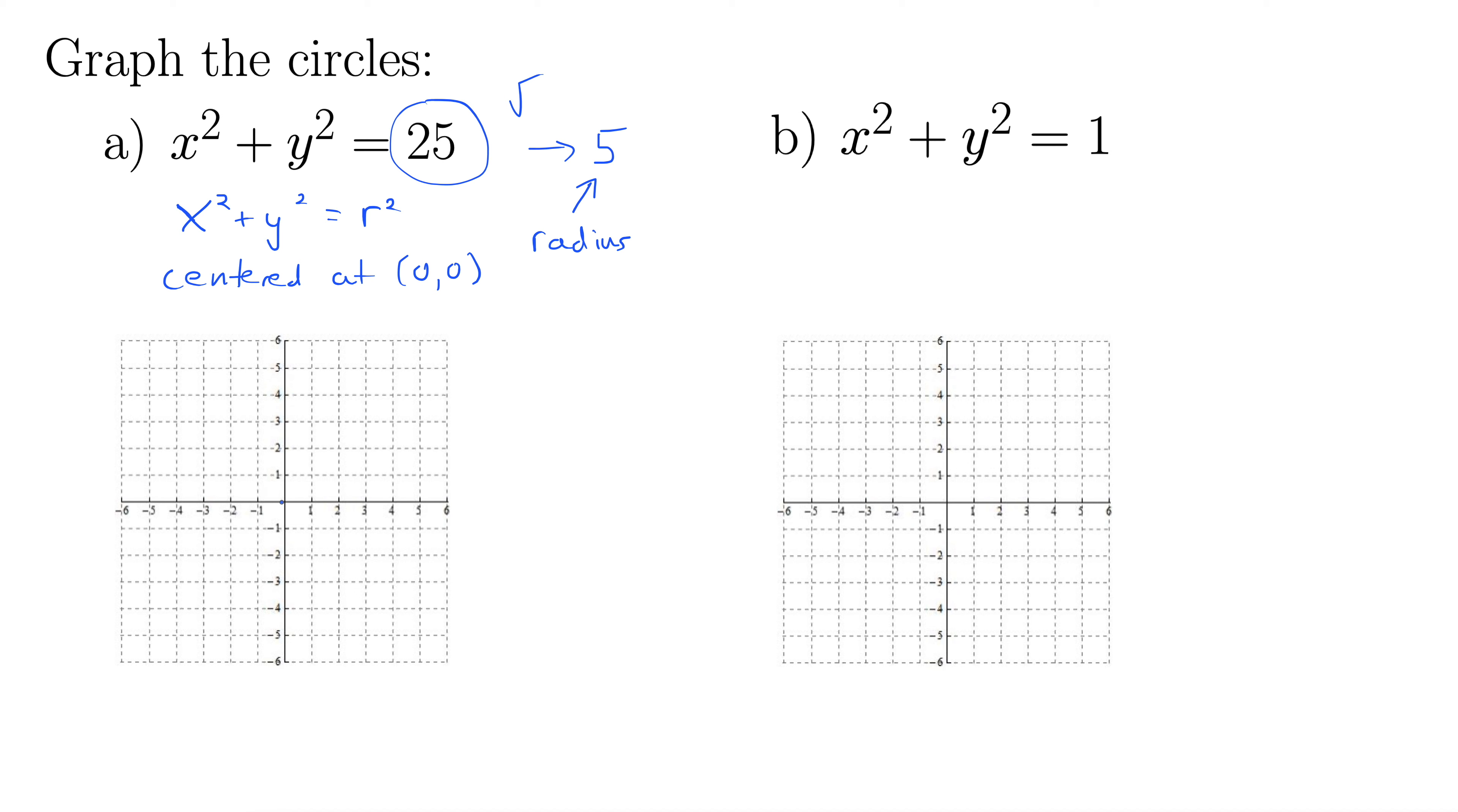So there's our center at the origin, which isn't really part of the circle. And then I'll go 5 to the right, 5 up, 5 to the left, and 5 down.